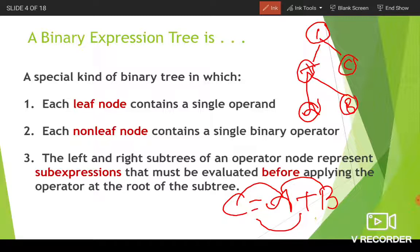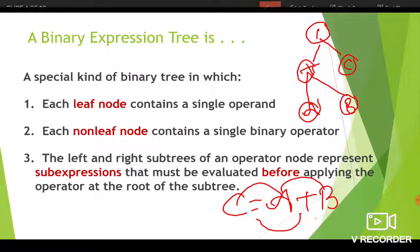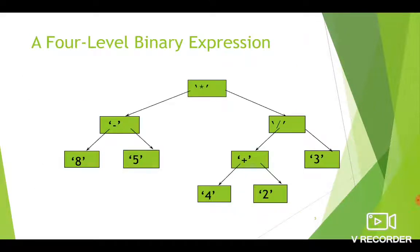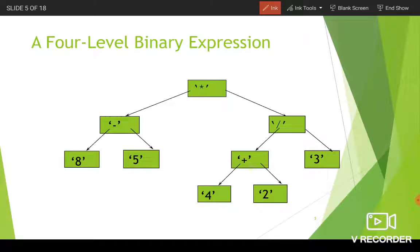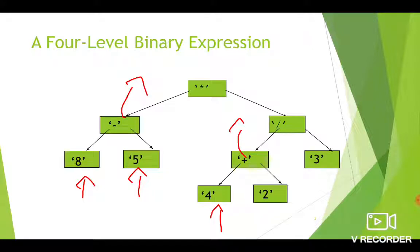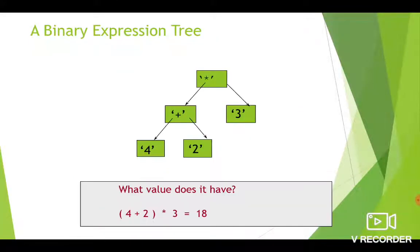Moreover, before evaluating the root node you have to evaluate its left subtree and then the right subtree, then move on to the root node. This is the procedure for evaluation. This example shows a four-level binary expression tree where all the leaf nodes contain operands and all the non-leaf nodes contain operators.